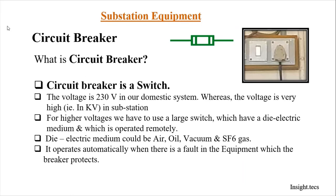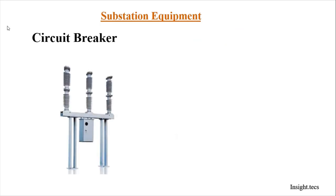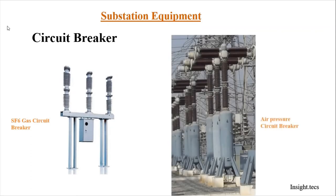At high voltage levels, dielectric materials like pressurized air, vacuum, oil, or SF6 gas are required to quench the arc. It is to be noted that circuit breakers are operated automatically and remotely from the control room whenever there is a fault in the equipment the circuit breaker is protecting. Shown here are examples of an SF6 gas circuit breaker and an air pressure circuit breaker.